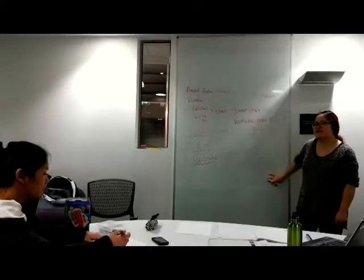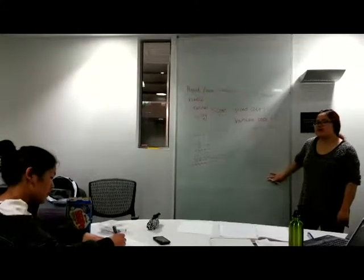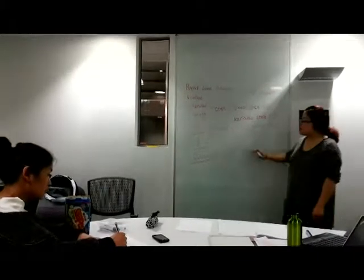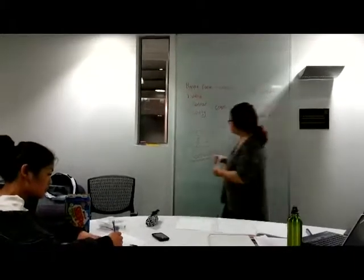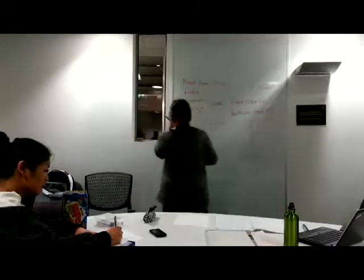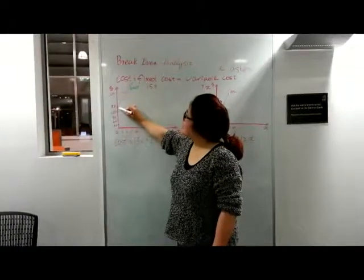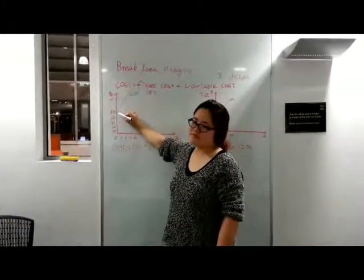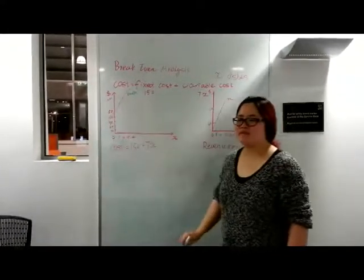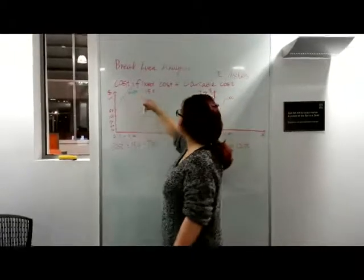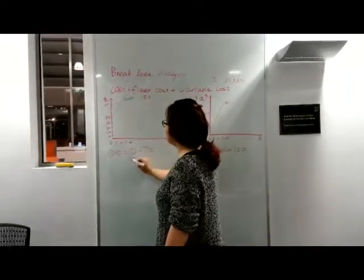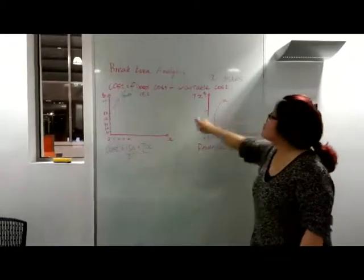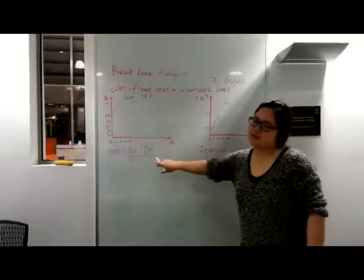Draw the graphs with X and Y axes. The Y-intercept in this graph — what does it mean? Fixed cost. Yes, fixed cost. You can see that 150 is the fixed cost here. These two are the graphs for the different equations.